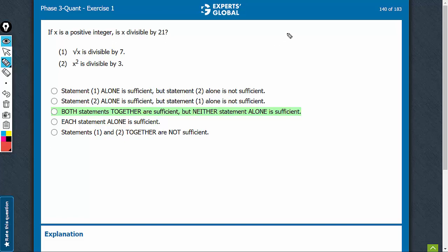Is x divisible by 21? To be divisible by 21, x should have 7 as a factor and also have 3 as a factor.